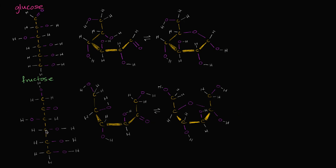The first thing that might jump out at you — and I encourage you to do this — these two molecules would be helpful ones to actually just be able to draw on your own, because you will see these many, many times in your biology, chemistry, and organic chemistry careers. But if we just compare these two, we see that they both have six carbons. So for both of them, the chemical formula would have six carbons.